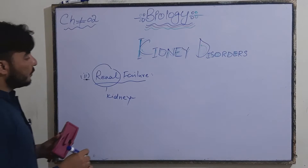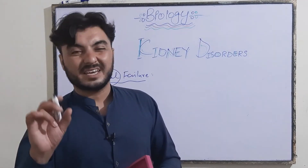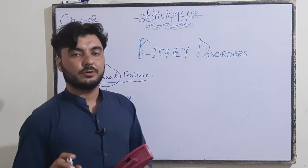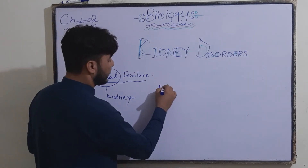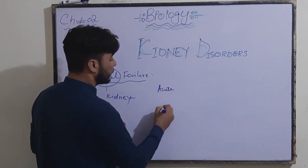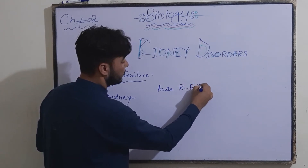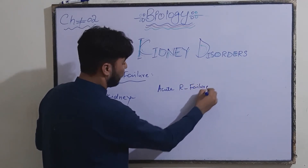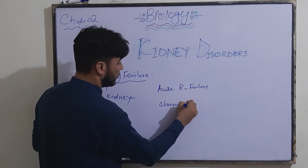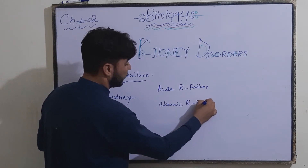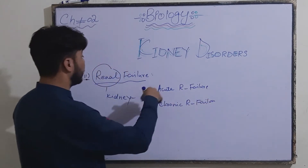Renal failure is of two types. One is acute renal failure and the other is chronic renal failure. We will discuss how renal failure occurs.